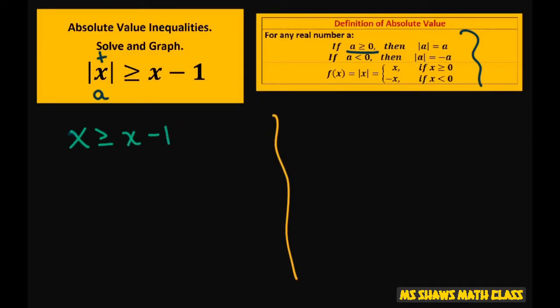And if a is negative, you're going to write this as negative x is greater than or equal to x minus 1. And if we negate this, just negate everything, that's going to be x because that's positive.